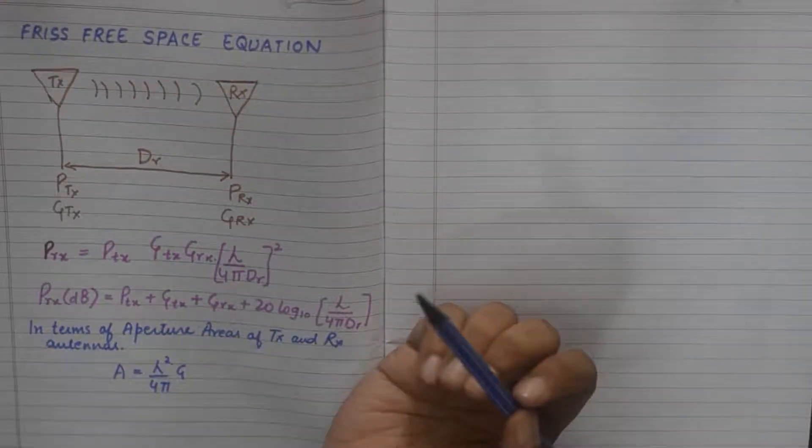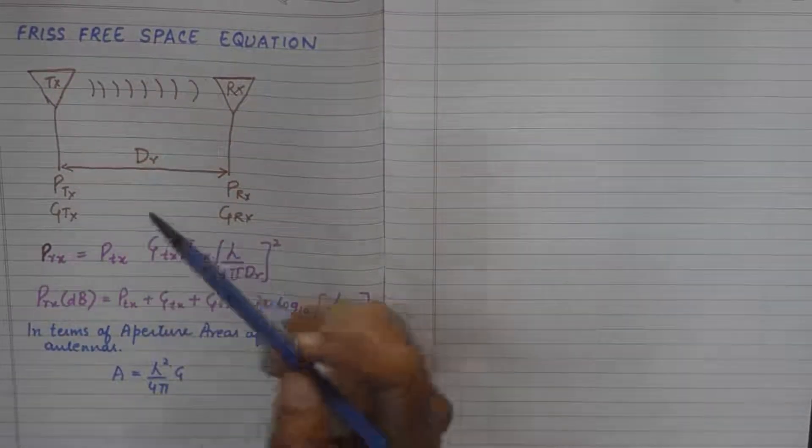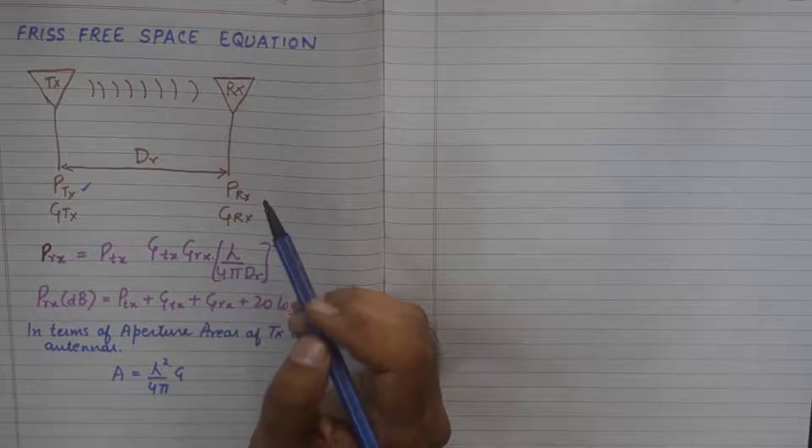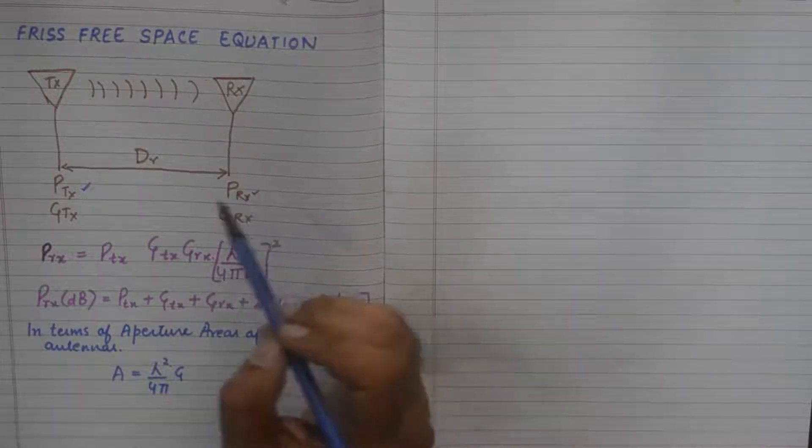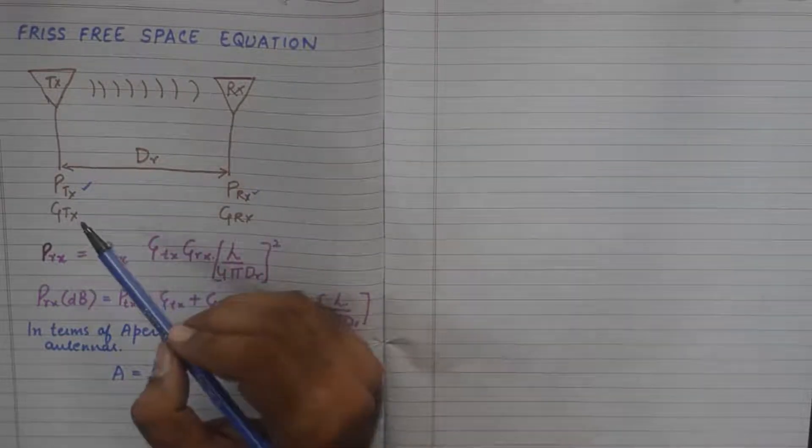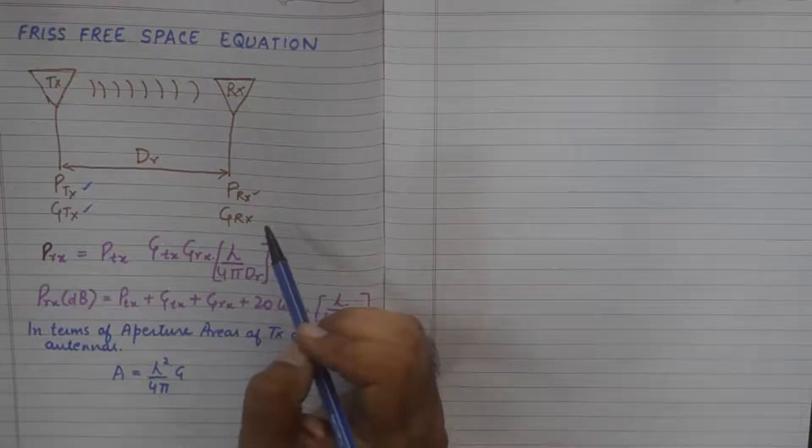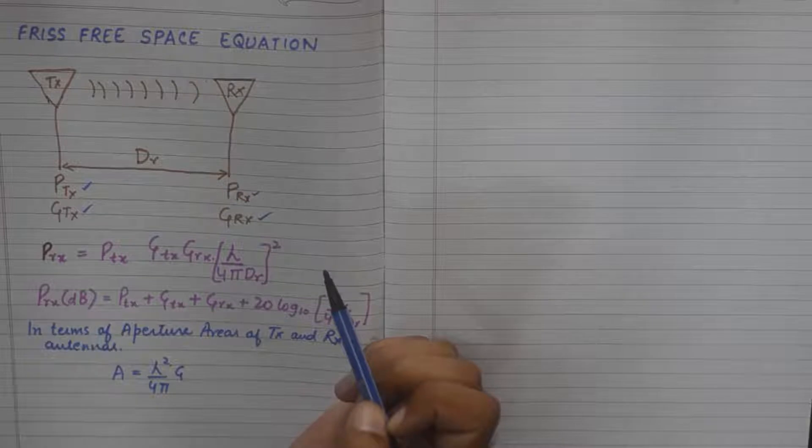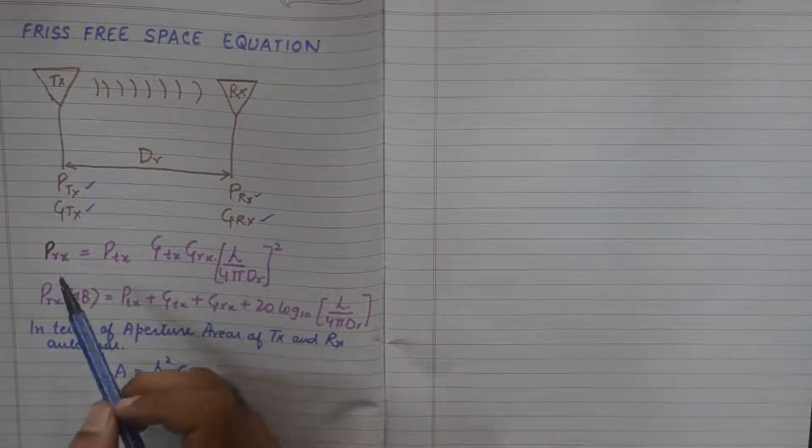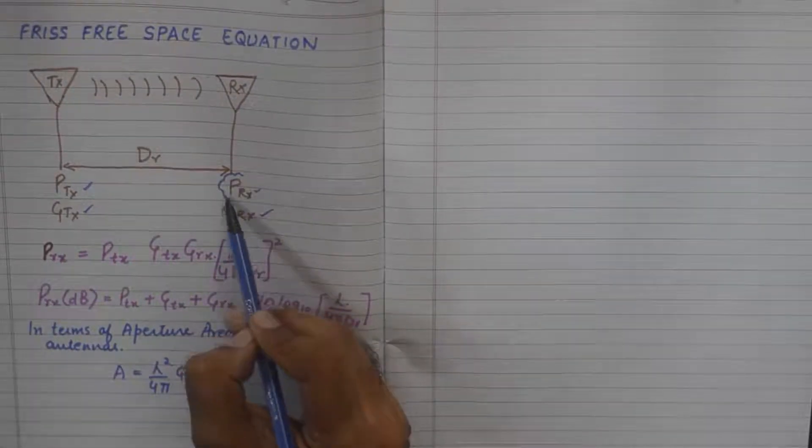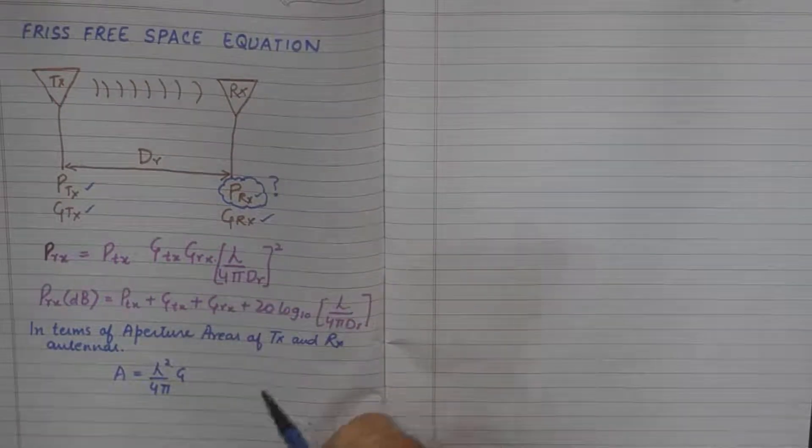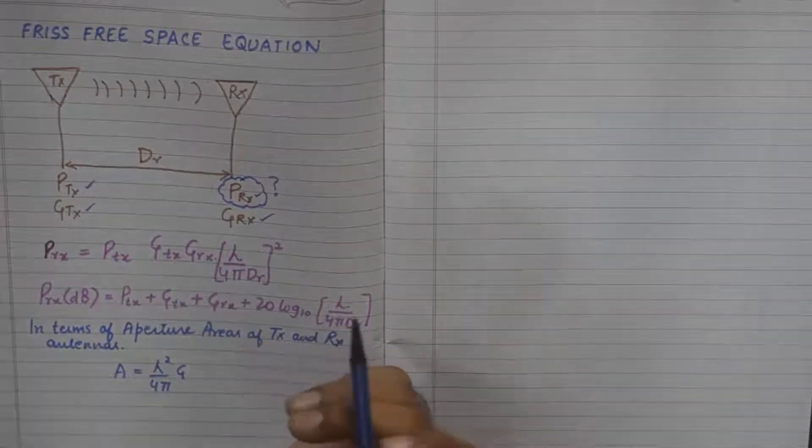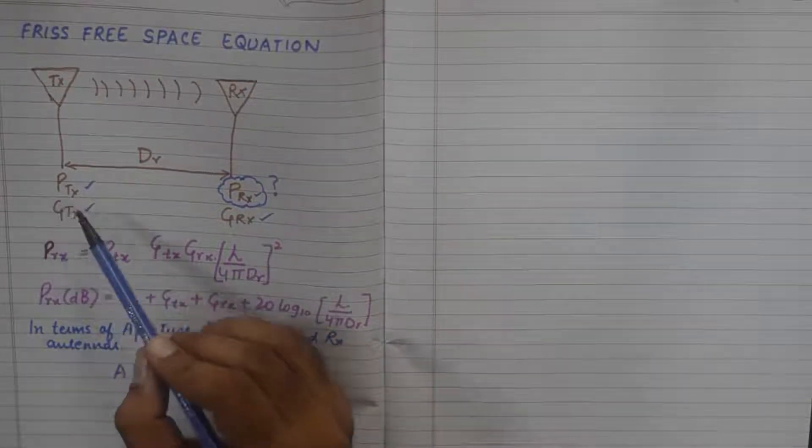For example, we have a communication system with a transmitter that has a transmitting power of P_Tx. Then we have a receiver that has a receiving power of P_Rx. They are separated by a distance of D_R. The gain of the transmitter is G_Tx and the gain of the receiver is G_Rx. The Friss Free Space Equation gives us in a very simple manner a way to calculate the received power. This is what we are trying to calculate. This will be unknown to us and we want to calculate the received power by a receiver if a transmitter sends a signal of certain power with certain gain to this receiver.